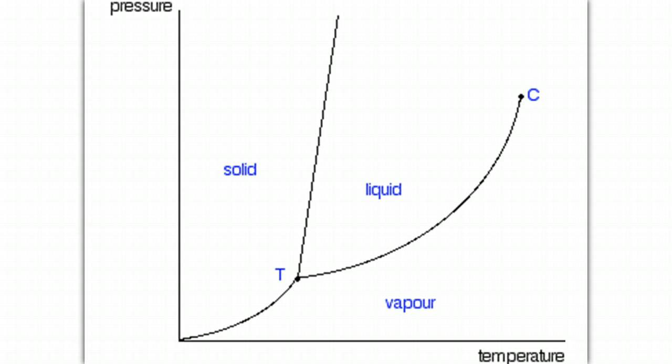So this phase diagram, whenever the pressure and temperature allow the substance to be in this section of the graph, it means it exists as a solid. When the pressure and temperature land in this section of the graph, the substance exists as a liquid and when the pressure and temperature land in this area of the graph, the substance is in the gas phase.